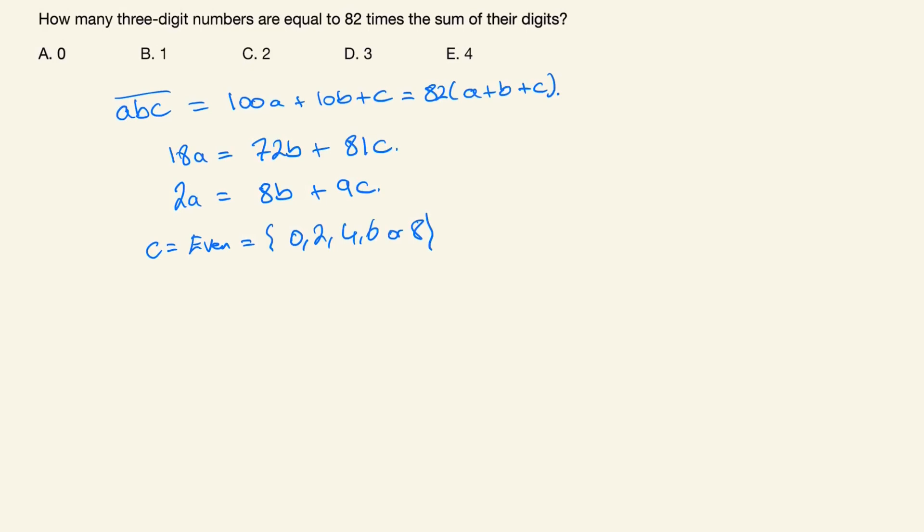Now if we go ahead and write C as 2K and substitute it into equation 1, we have 2A equals 8B plus 18K. Divide everything by 2 and you get A equals 4B plus 9K.